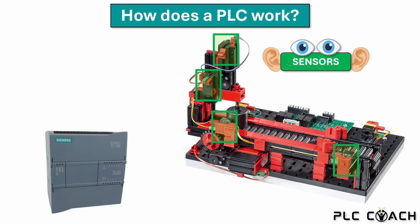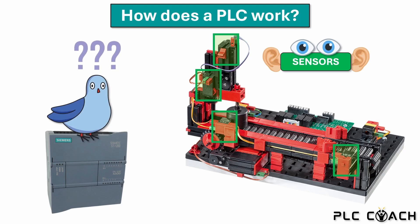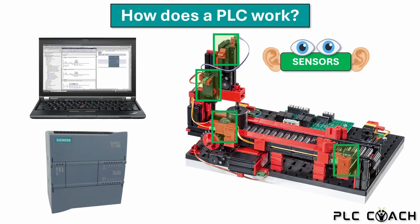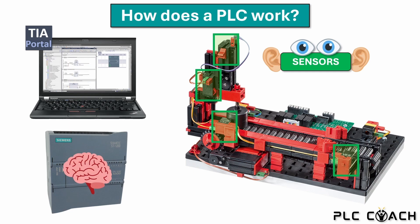We have now learned that sensors send data to the PLC. But what does the PLC do with this information? In fact, the PLC does nothing with this data on its own. Our PLC is actually quite dumb. We, the PLC programmers, give the controller its intelligence by creating a PLC program. Siemens provides the programming software TIA Portal for this purpose. In TIA Portal we create a project, write the program, and then download it to the device. After that the PLC knows how to process the information from the sensors.